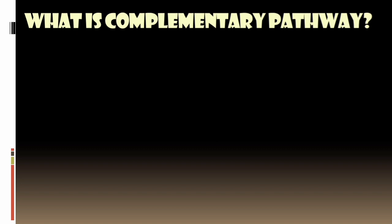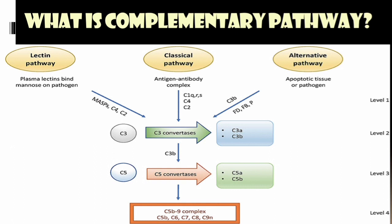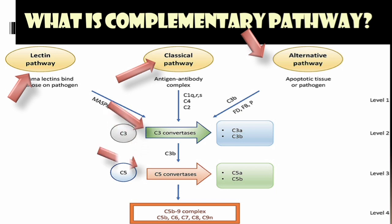In the complementary pathway, there are three different pathways: the lectin pathway, the classical pathway, and the alternative pathway. Among these three pathways, there are two important complement proteins we have to remember — C3 and C5.